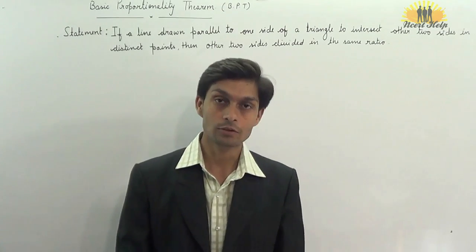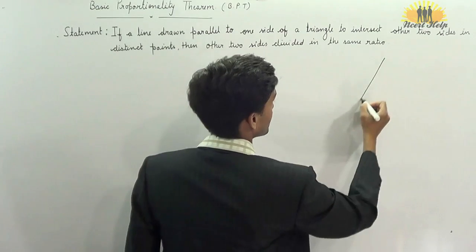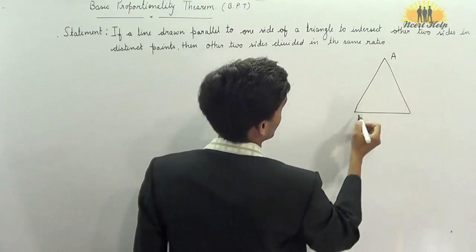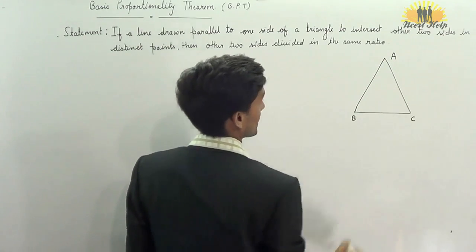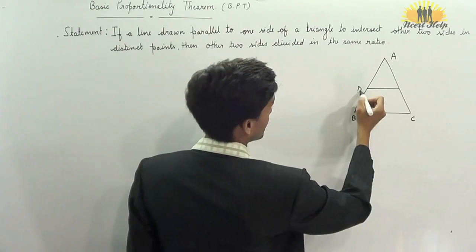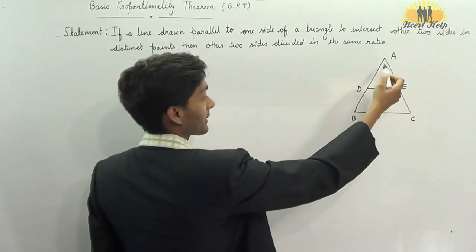Let us understand this theorem with the help of a diagram. A, B, C is a triangle in which a line D, E is drawn parallel to B, C intersecting A,